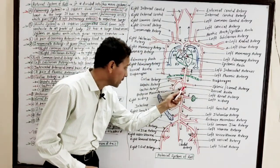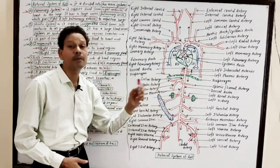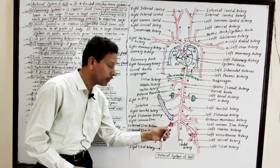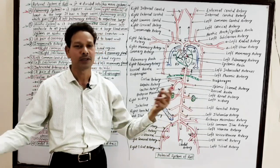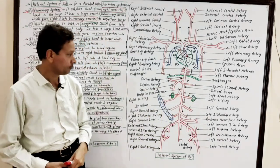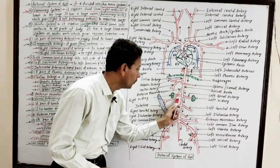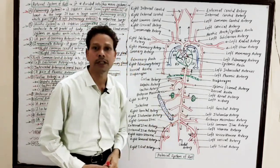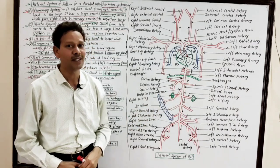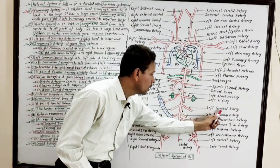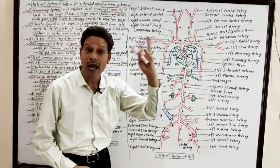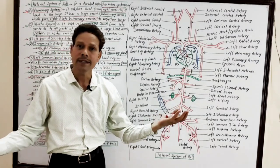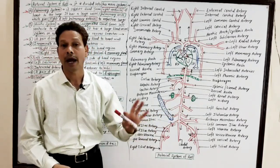The next blood vessel from the dorsal aorta is the anterior mesenteric artery, which carries oxygenated blood to the digestive tract — the small intestine and large intestine. Then a pair of renal arteries, right and left, carry oxygenated blood to the kidneys. Then a pair of genital arteries supply oxygenated blood to the gonads, genital organs, sex organs, and reproductive tract.